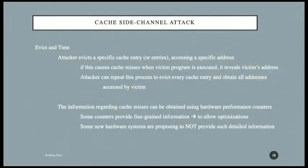The second type is evict and time. You don't fill the entire cache; you selectively evict the victim's data. You store some data into a cache line, and if that causes a miss for the victim, then you know the victim accesses that data item. If the victim accesses the data and you evicted it, the victim will take longer — causing a cache miss. You can start evicting one line at a time. If the victim uses that line, it causes a cache miss. If the victim did not touch that line, there is no cache miss, so you know the victim did not use that address.